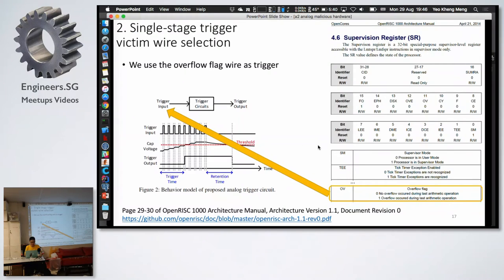Here the overflow flag is connected to the trigger input. Imagine if they trigger overflow many times eventually, the output will be triggered. And this, they wire the output to here, to the supervisor bit. So eventually when it triggers, it comes here, then you flip the bit to one. So your process now has supervisor access already.